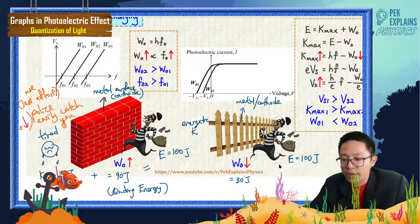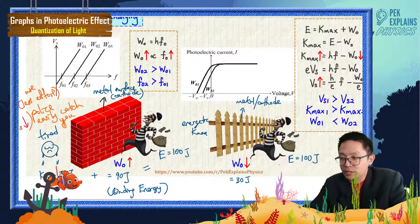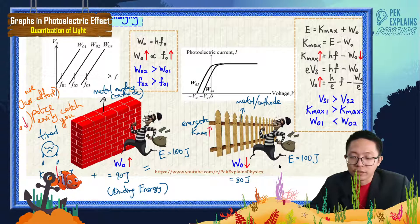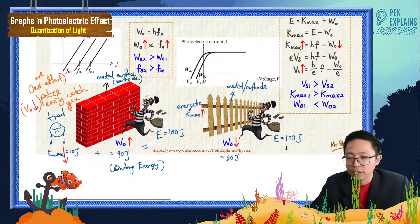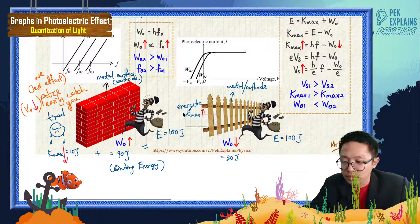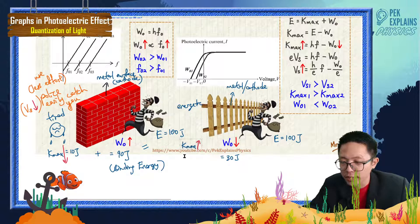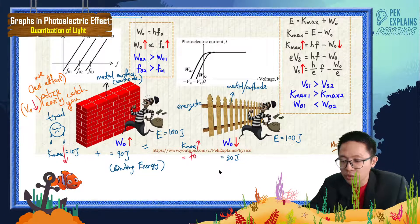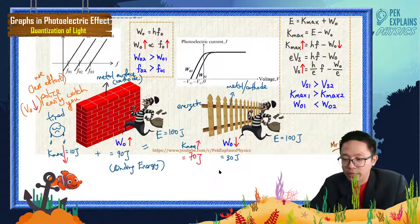He has high kinetic energy left over. After 100 minus 30, you still have 70 joules of energy. So K_max is very high — he still has 70 joules. The person is very energetic.